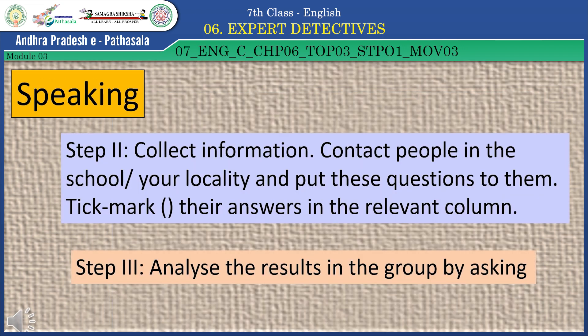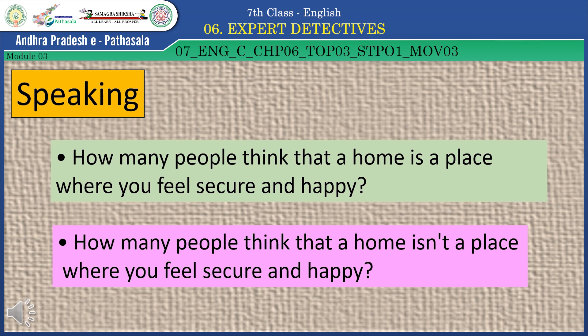In speaking, Step 2: Collect information. Contact people in the school or in your locality and put these questions to them. Tick mark the answers in the relevant column. Step 3: Analyze the results in the group by asking — how many people think that a home is a place where you feel secure and happy? And how many people think that a home is not a place where you feel secure and happy?